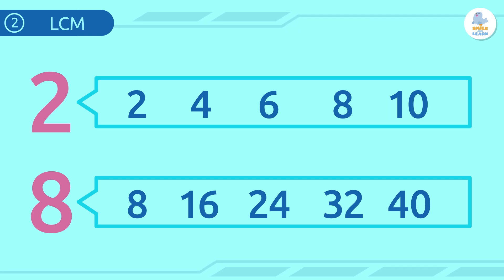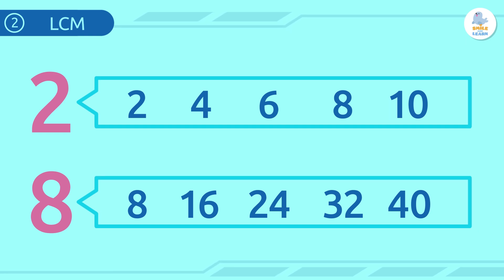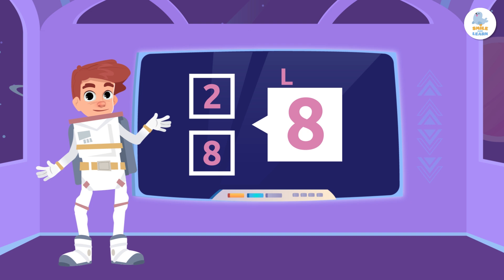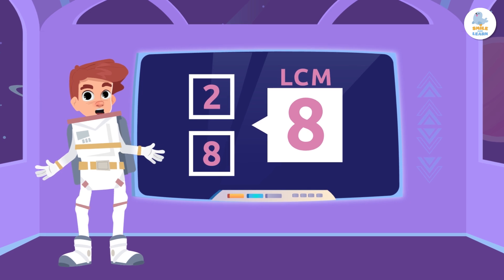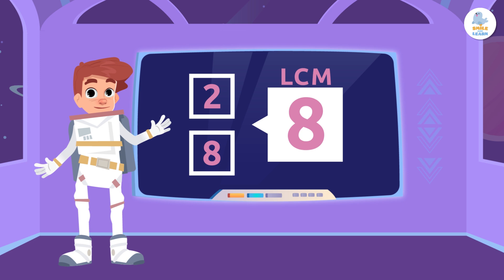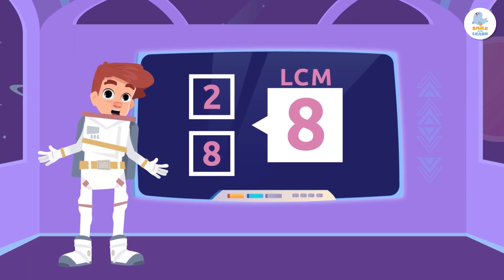Now that we have the multiples of these two numbers, we can see which is the smallest multiple they have in common. The least common multiple of 2 and 8 is 8 — it's the smallest multiple that both numbers share. Finding the LCM of small numbers is easy, but there is another way to calculate it that helps when working with larger numbers.